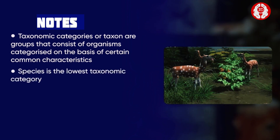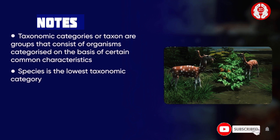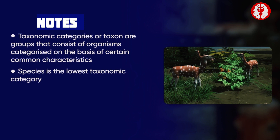Species is the lowest taxonomic category that consists of one or more natural populations of individuals that resemble one another more closely than individuals of related species.